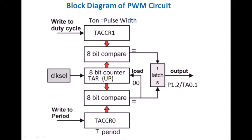This is the block diagram of the PWM circuit. In this block diagram, capture compare register 1 and capture compare register 0 are used. Two 8-bit comparators are available and the timer is used. The 8-bit timer register TAR is used here.